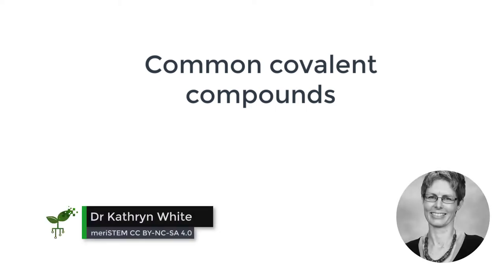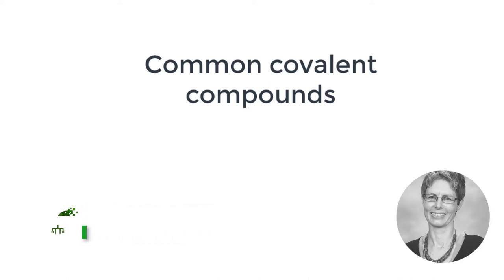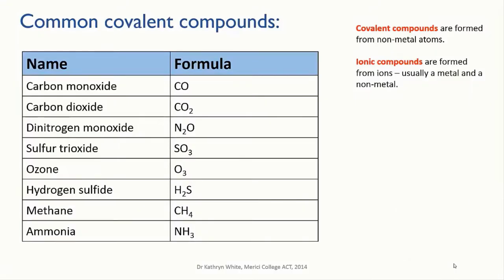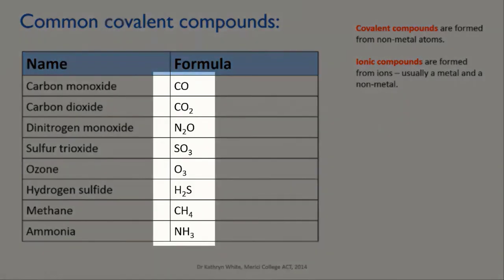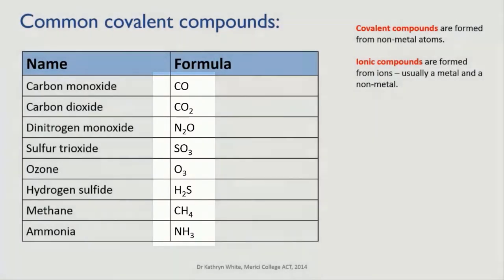Firstly, covalent compounds. What is a covalent compound? We've already dealt with ionic compounds briefly, and we said that they're formed when a cation, a positively charged ion, and an anion attract each other, and usually this happens between a metal and a non-metal. If you look at the compounds here, you'll notice that they're all made of non-metal elements joined together. When non-metal atoms bond, they do it by sharing electrons rather than by forming ions. The details of how the bonding occurs we can leave for later. For now, you need to remember only that covalent compounds are made from non-metal atoms only, and they don't involve ions.